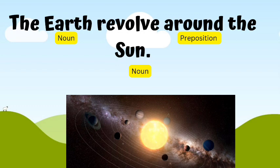For example, the earth revolves around the sun. In this sentence, earth and sun are nouns. Around is a preposition.